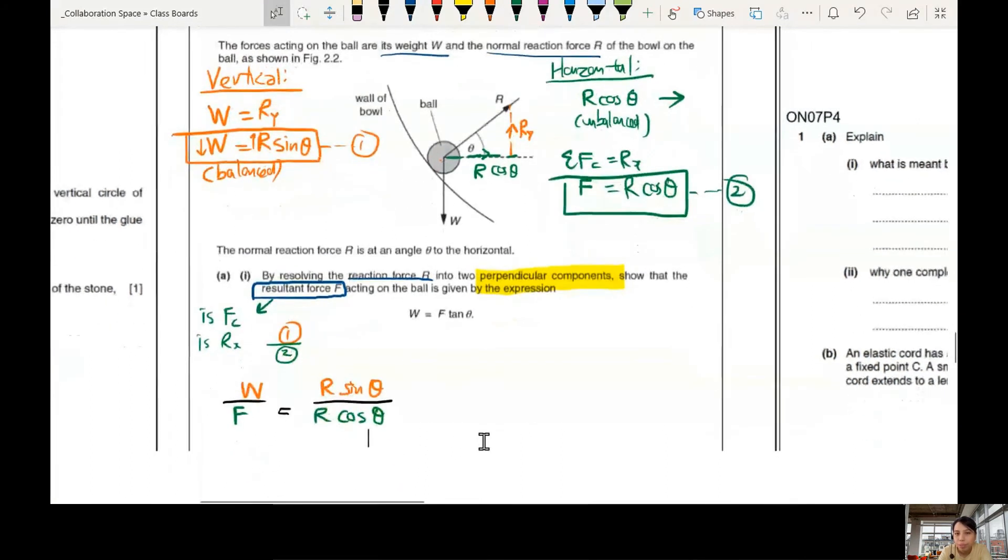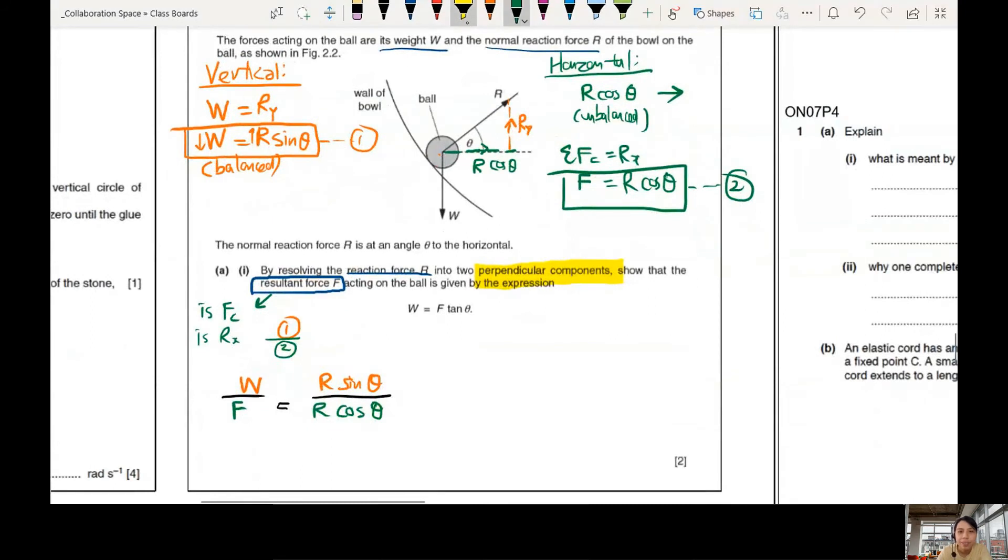You managed to reach this stage. Hopefully you got some. Okay, so in the end of the day, R and R cancel out. Sine divided by cos is tangent. And this one is just W over F. Yay, we managed to get rearranged a bit. Then got already. This is F tangent theta.